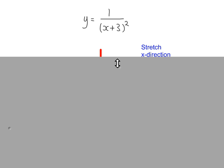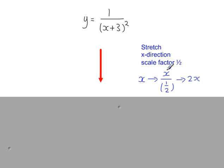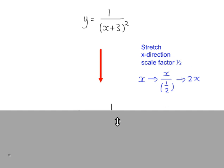Now we're going to stretch the graph in the x direction with a scale factor of a half. So we need to replace the x in this equation with x divided by the scale factor of a half, which simplifies to 2x. So replace the x here with 2x to get this.